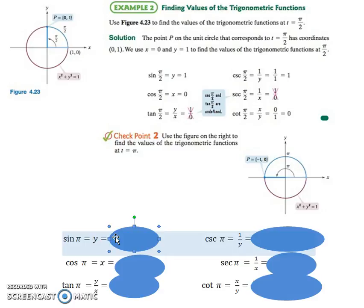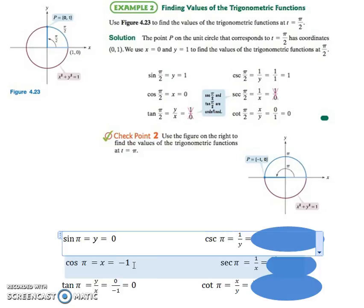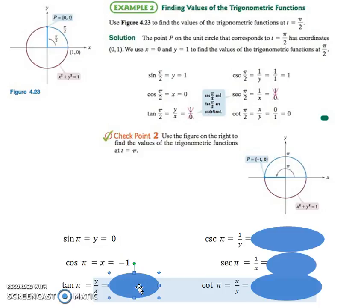So we do all the same things. Remember that your sine is your y value, so that would be 0. Cosine is the x value, that would be negative 1. Tangent would be sine over cosine, which is 0 over negative 1, which is 0.